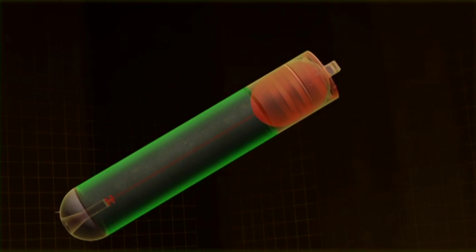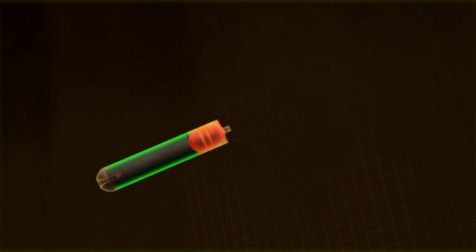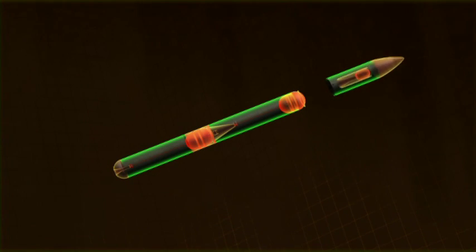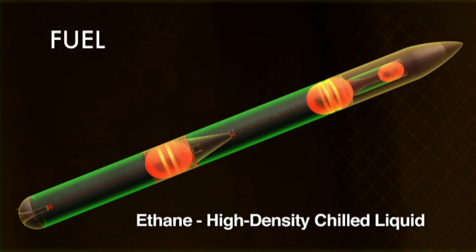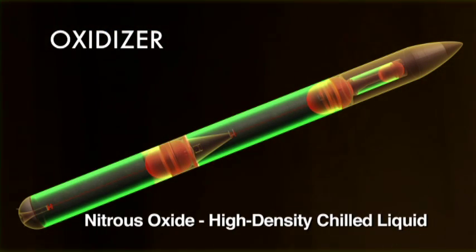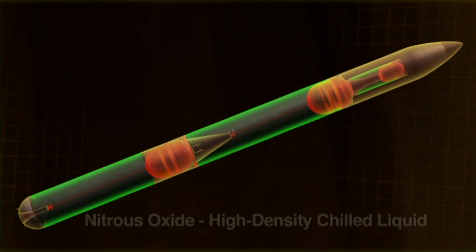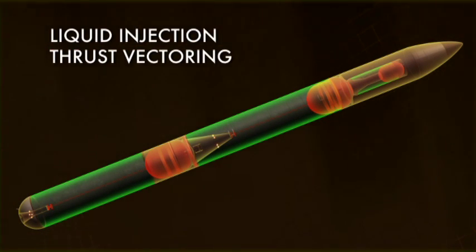The M&Ms booster design is composed of liquid propellant tanks and engines, with a common design approach used for all three stages. Fuel: ethane, high density chilled liquid. Oxidizer: nitrous oxide, high density chilled liquid. Pressure fed engine, liquid injection thrust vectoring.